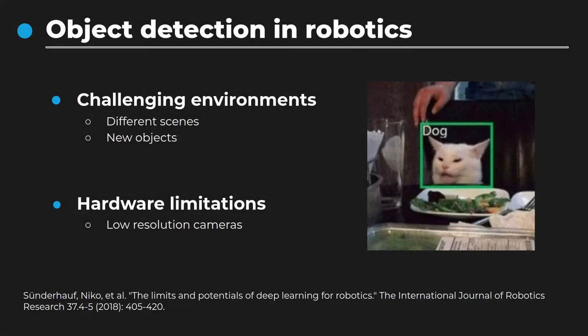Moreover, when applying these models to robotics, an issue arises: how to deal with the changing environment and any object the robot will encounter. While performing well on benchmark datasets, deep learning models suffer a drop in performance when applied to robotic platforms, mainly due to the environments robots are deployed in, which were not represented in the training dataset. Robots, due to hardware and space limitations and the requirement to run in real-time, usually cannot use high-resolution cameras, which are not the standard in benchmark datasets. All these factors put constraints on the deployment of deep learning in robotics and require a new approach to deal with these limitations.